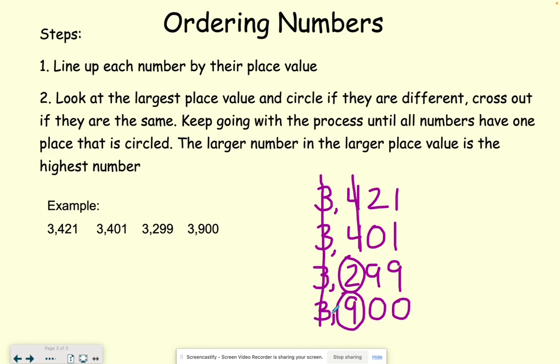So right there, it kind of already tells us which one is our smallest because it has a two that's smaller than four or nine. And we know which one is the largest because nine is bigger than two or four.